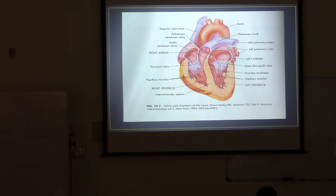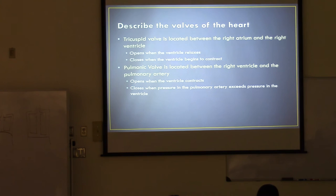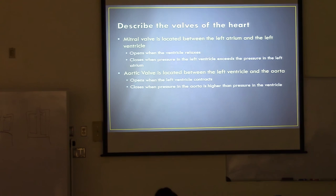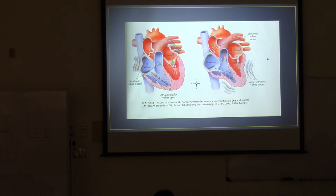Now we have to know the names of the valves. The tricuspid valve is located between the right atrium and the right ventricle. The tricuspid valve will open when the ventricle relaxes and it'll close when the ventricle begins to contract. You're looking for the valve that goes between the right atrium and the right ventricle.